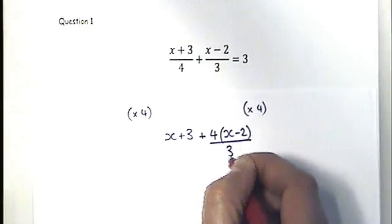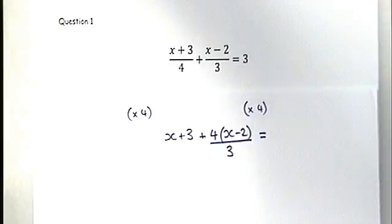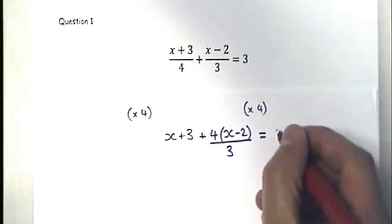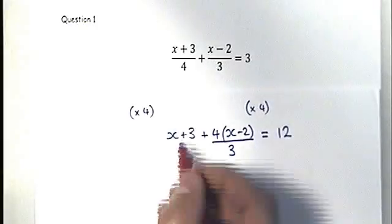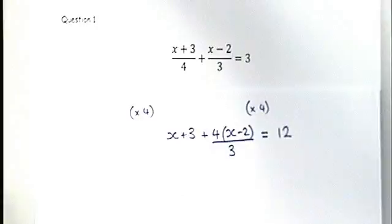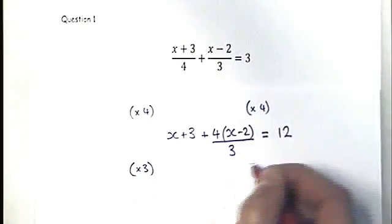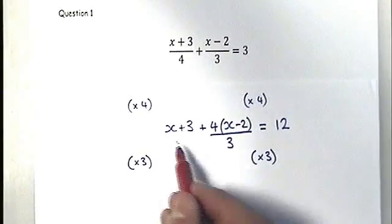We multiply the numerator and keep the same denominator. On the right-hand side, three times four makes twelve. So that's the first step — we've got rid of the denominator in the first fraction. Now we're going to get rid of the remaining denominator by multiplying by three, because it's the inverse of dividing by three.